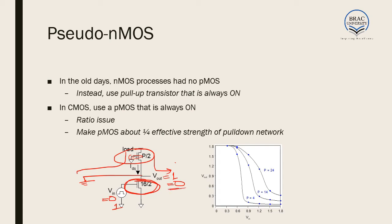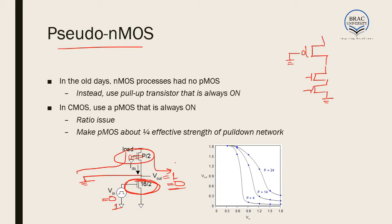So using pseudo-NMOS, we can implement all the equations that we have been implementing using static CMOS. For example, if we are considering a NAND gate, the NMOS side of the NAND gate has two NMOS in series. So if we want pseudo-NMOS logic, on the pull-up side we will just connect a PMOS connected to ground, and from here we will get the output. This is the pseudo-NMOS representation of the NAND gate.